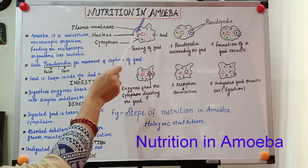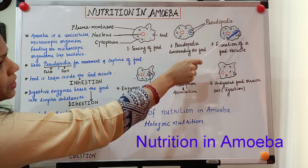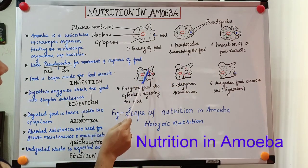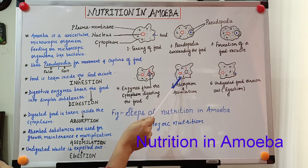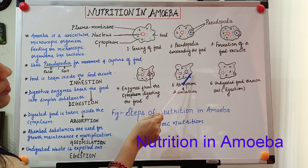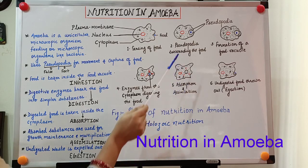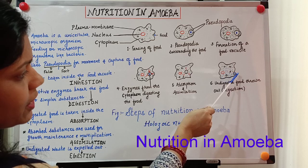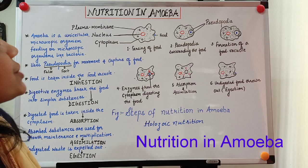To recapitulate: when amoeba senses food it extends out its pseudopodia. Pseudopodia form a food vacuole inside which the food is trapped. Digestive enzymes act on the food inside the food vacuole. After the food has been converted into soluble substances, it is absorbed inside the cytoplasm. Inside the cytoplasm it is utilized for growth, maintenance, and multiplication by a process called assimilation. The food which remains undigested comes out by rupturing of the plasma membrane through any point. This is all about nutrition in amoeba.